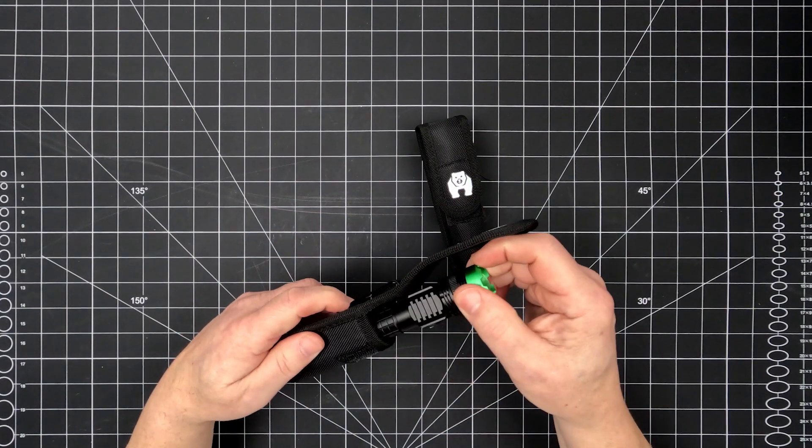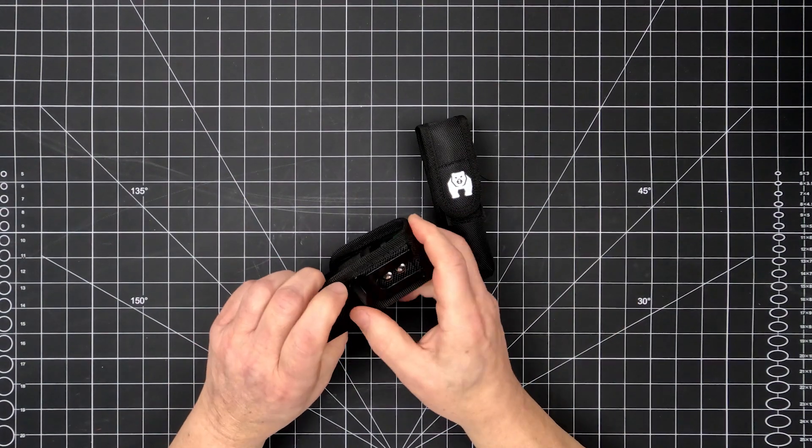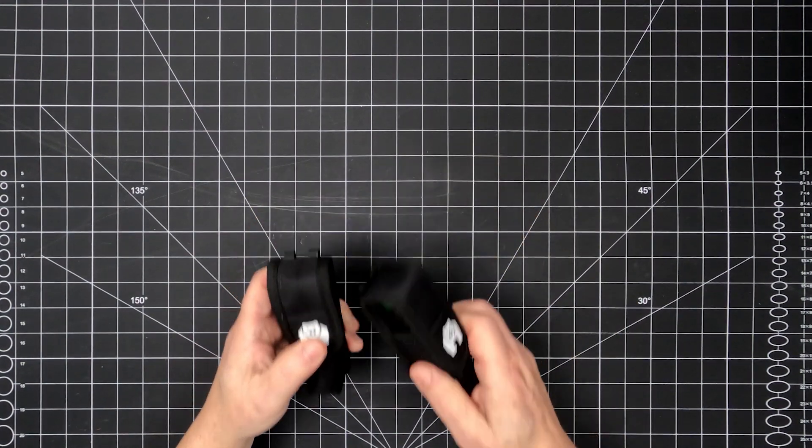Both flashlights come with a fitted sheath with an integrated strong metal belt or pocket clip.